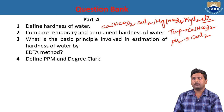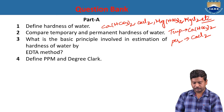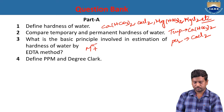What is the basic principle involved in the estimation of hardness of water by EDTA method? It involves the complexometric method — that means when a metal ion reacts with EDTA to give a metal-EDTA complex.